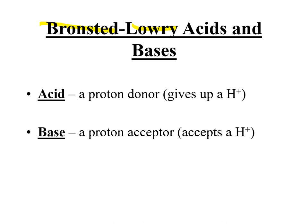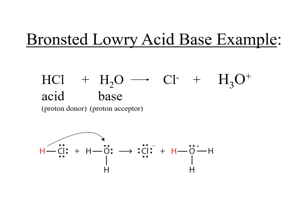Their definition: an acid is something that is a proton donor. A proton is our hydrogen ion. A base is the substance that is going to be the proton acceptor — the one that accepts the hydrogen ion. Let's look at an example using a Bronsted-Lowry acid-base reaction. Our acid in this example is hydrochloric acid, and we're going to react it with water as our base.